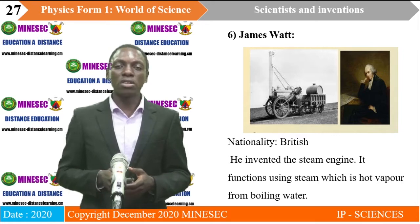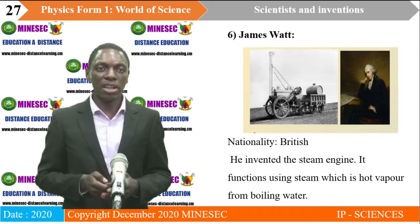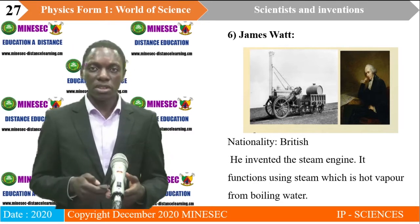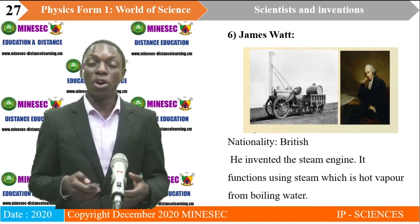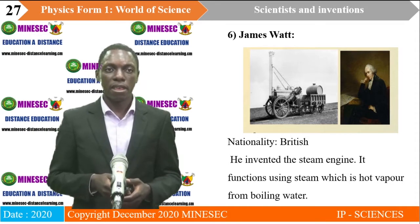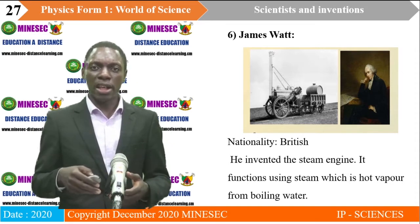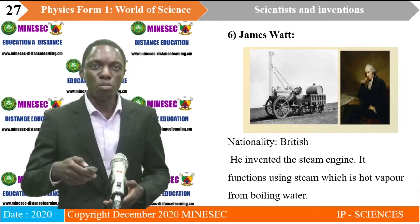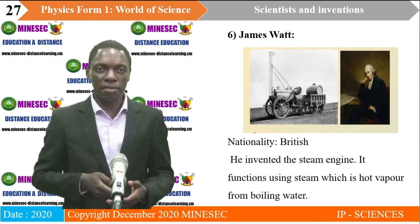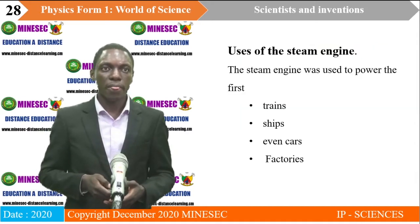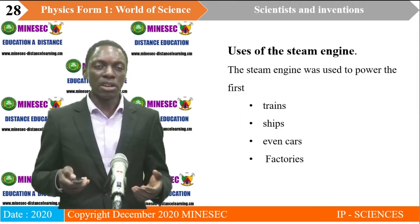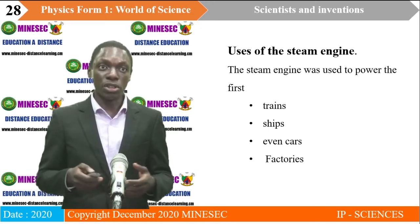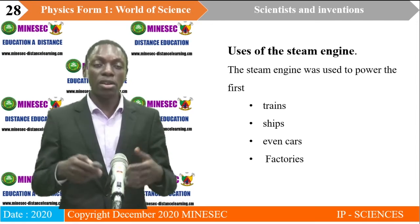James Watt was a British inventor who invented the steam engine. The steam engine functions using steam — which is simply hot vapor from boiling water. If you have ever boiled water, you may notice the lid of the pot being moved by vapor, meaning steam can cause movement. These scientists exploited that fact to come up with the steam engine, which is used in various machines like trains, ships, cars and factories.